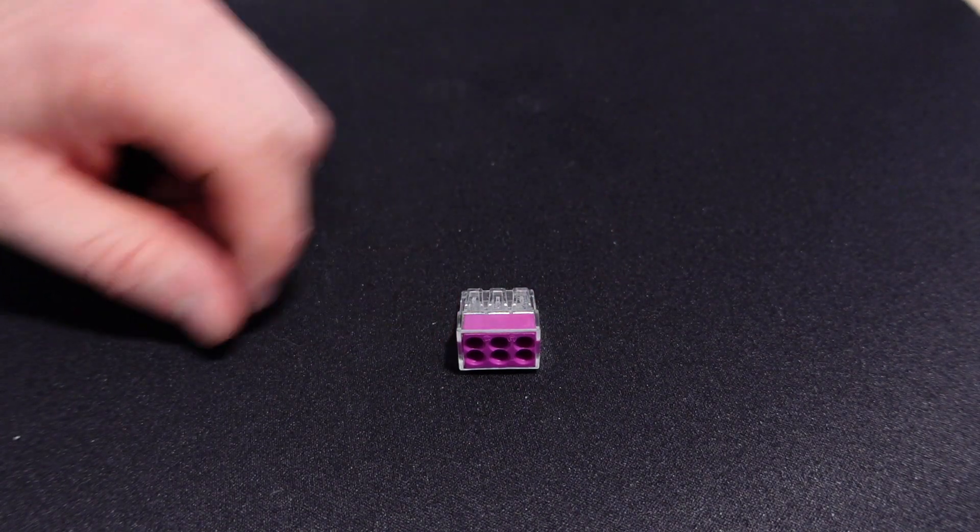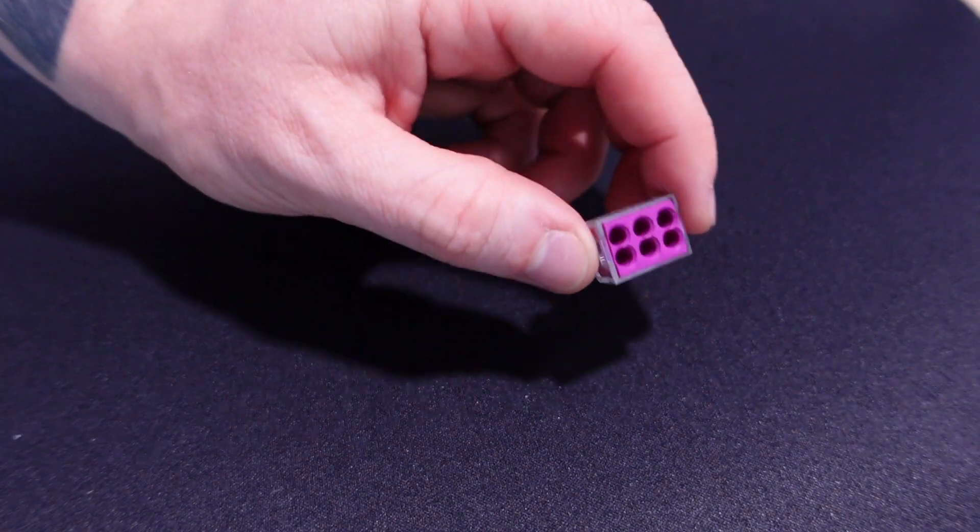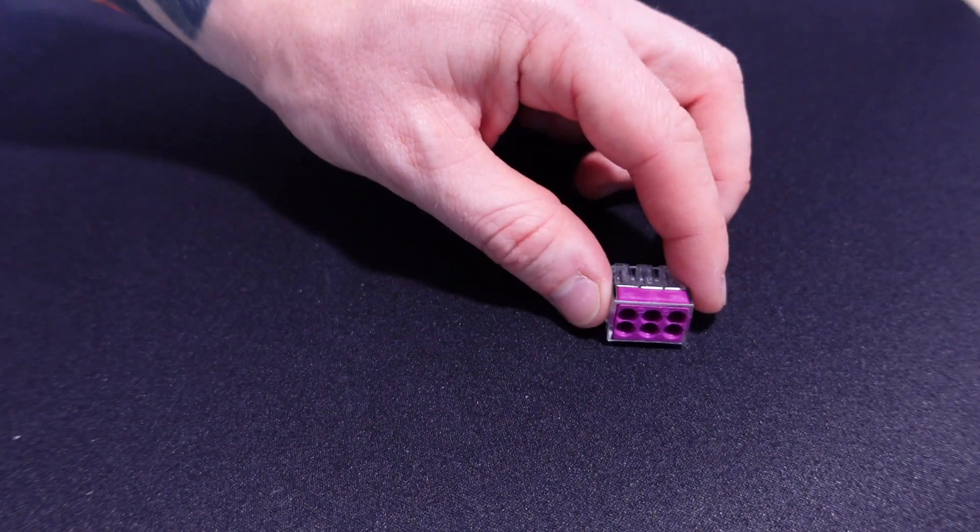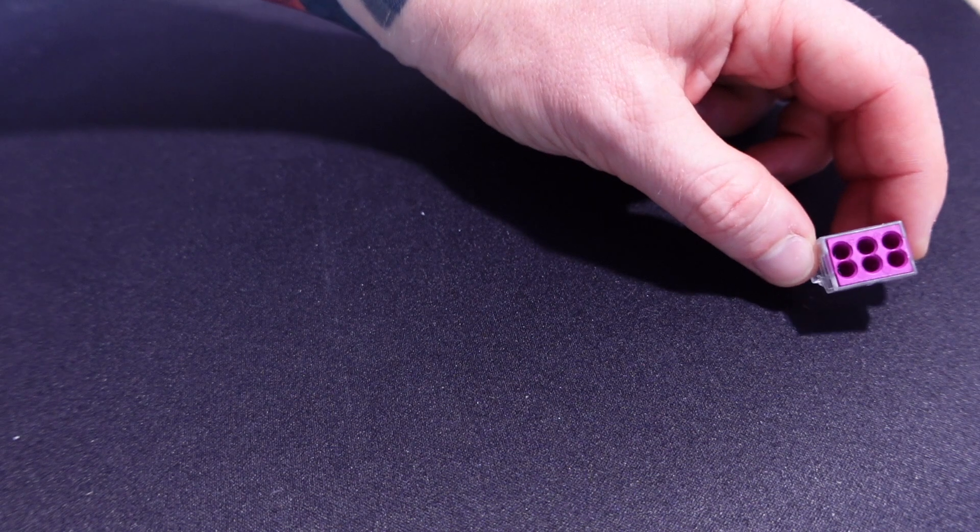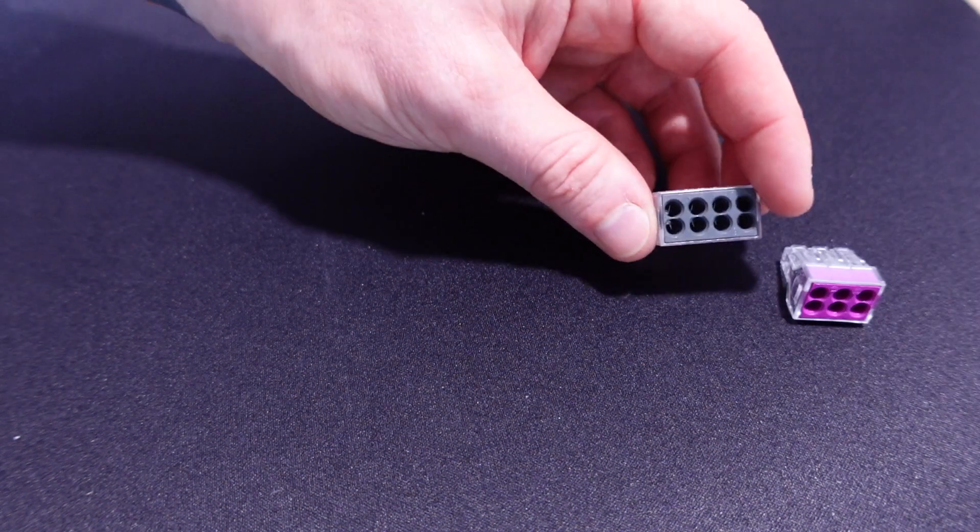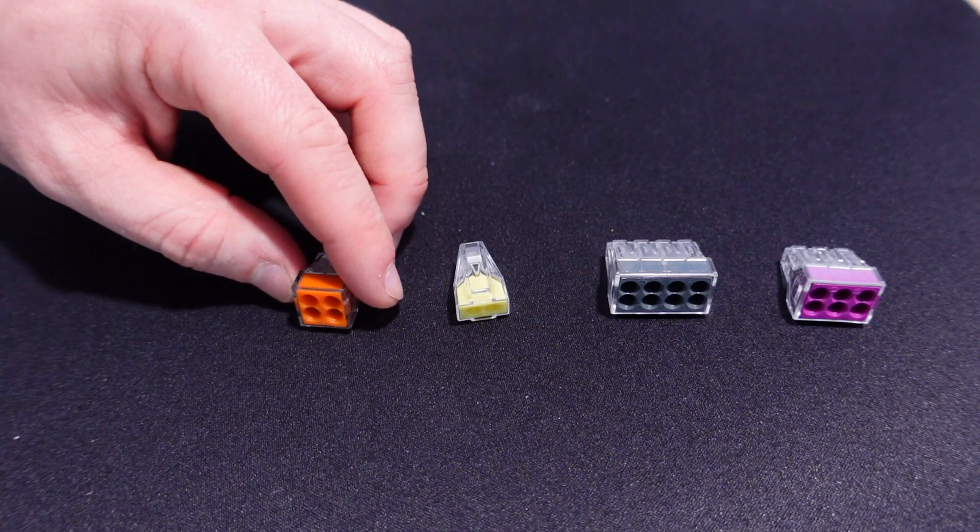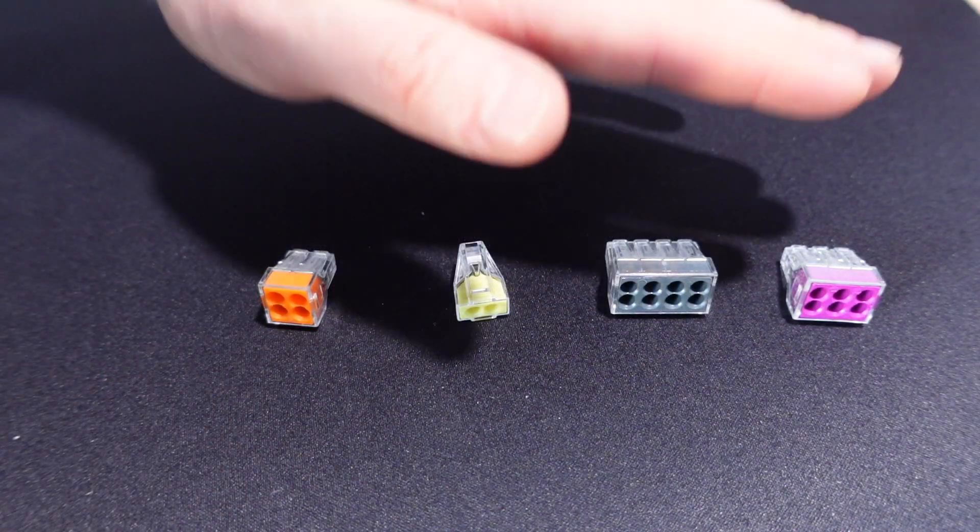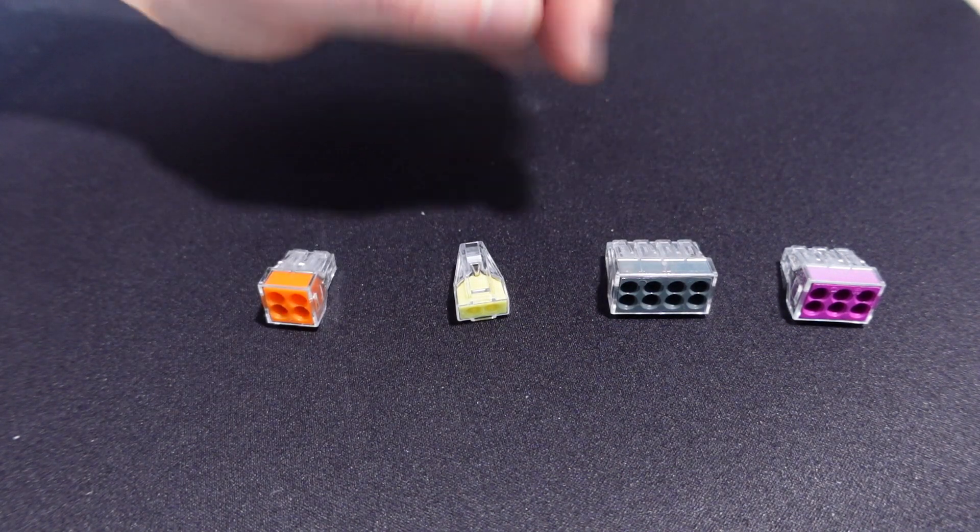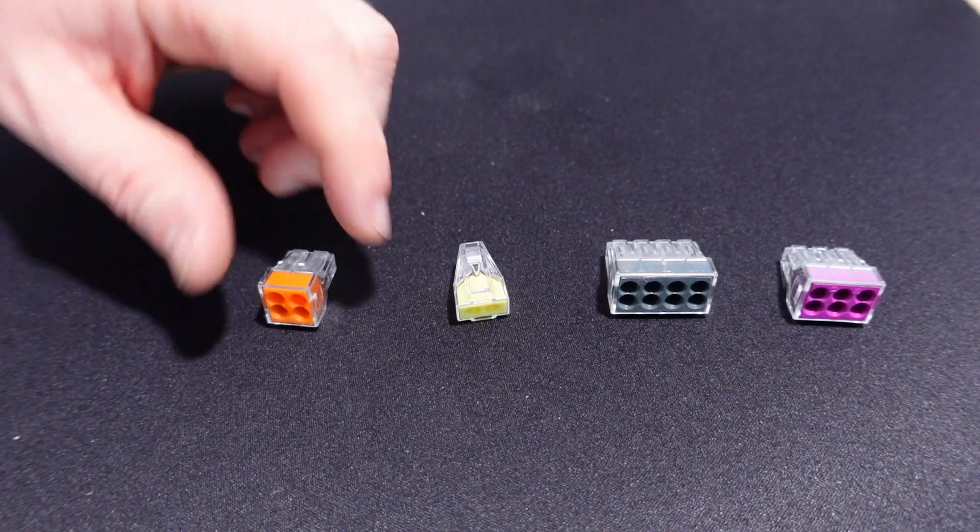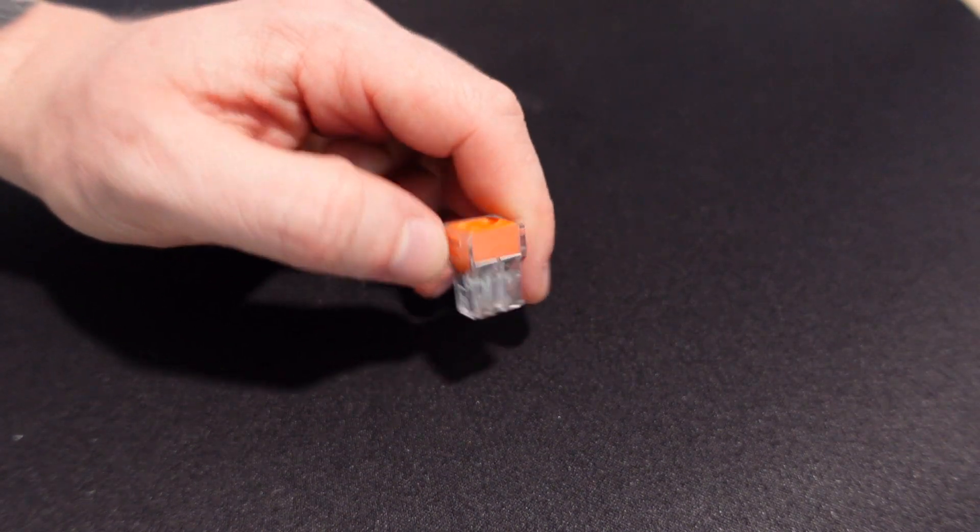So let's move on to the push fit connectors. So the most popular brands for these are Wago and Ideal. With Wago, they're color coded. So we have a six wire connector, an eight wire connector, a two wire connector, and a four wire connector, and they're all color coded. That makes it very easy to buy a multi-pack and I'll put a link in the description where you can get them. Now we'll use the four wire connector for the example.